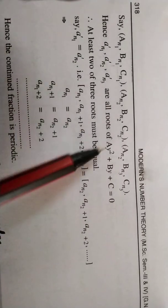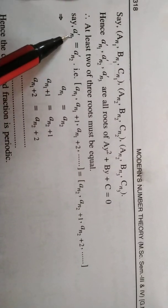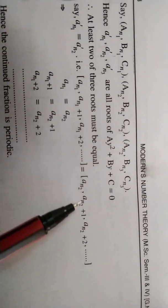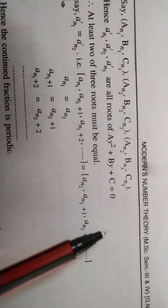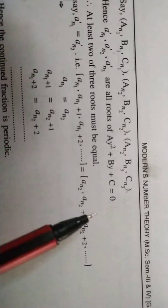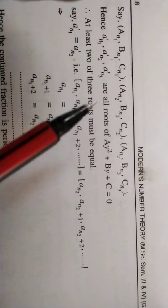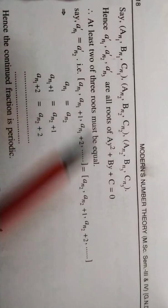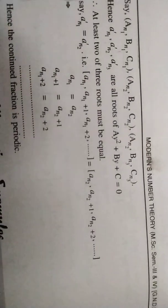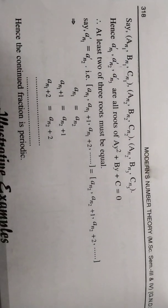Since there are only finitely many triplets, by the pigeonhole principle, two values must coincide: a_{n1}' = a_{n2}'. This means the continued fraction starting at a_{n1} is identical to that starting at a_{n2}, so the continued fraction is periodic. This completes the proof of the converse theorem. Thank you very much students for watching. Signing off, Dr. Gaurav.